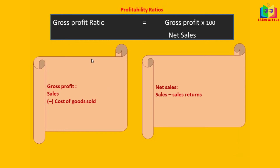First, we will see what is meant by gross profit ratio. It explains the relationship between the gross profit and net sales. You can easily find gross profit using sales and cost of goods sold. Sometimes the gross profit will be given in the problem itself — in that case you can take it directly; otherwise, you have to find gross profit using the formula. Net sales is sales minus sales returns.